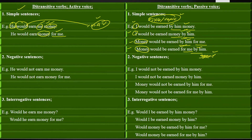Next we have negative sentences — those in which we deny, reject, or refuse the statement. Active: 'He would not earn me money' and 'He would not earn money for me.' Passive: 'I would not be earned by him money.' 'I would not be earned money by him.' 'Money would not be earned by him for me.' 'Money would not be earned for me by him.'